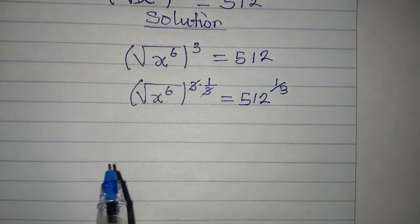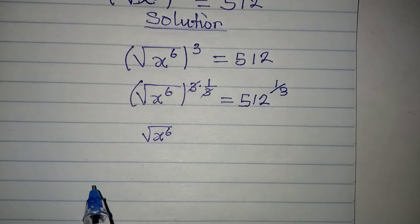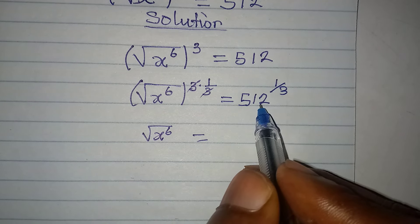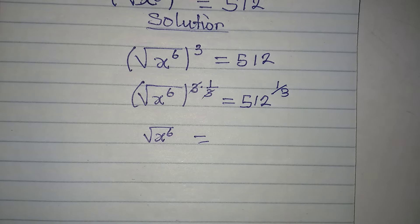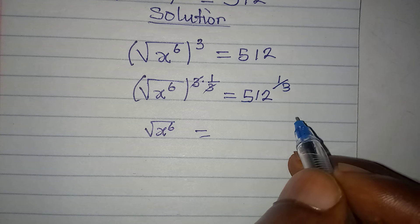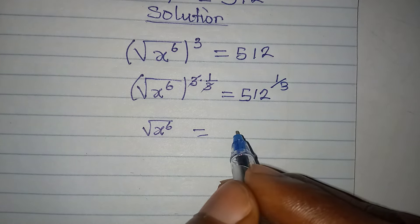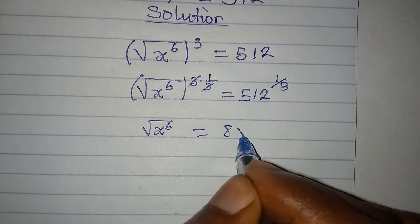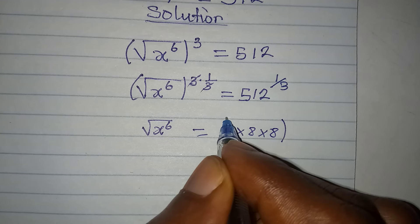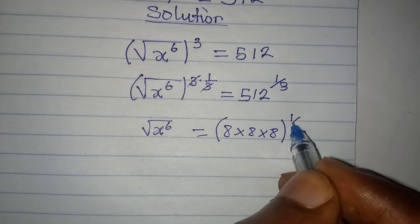The 3 and 1/3 cancel each other, so the square root of x to the power of 6 equals 512 to the power of 1 over 3. Now, what is 512 to the power of 1 over 3? Do you know that 512 is the same as 8 times 8 times 8? So 512 to the power of 1 over 3 is 8 cubed to the power of 1 over 3.